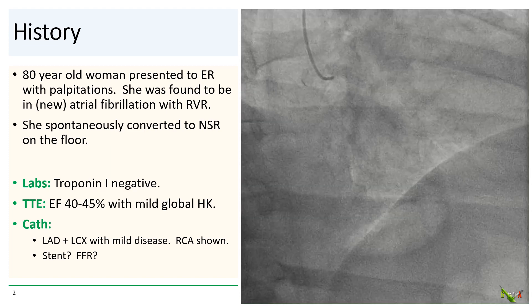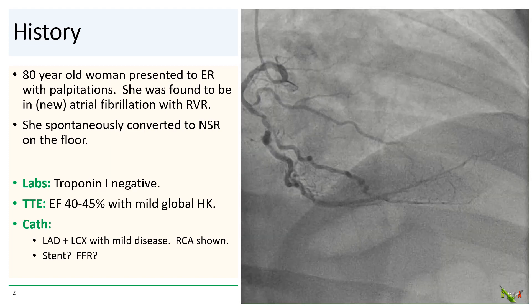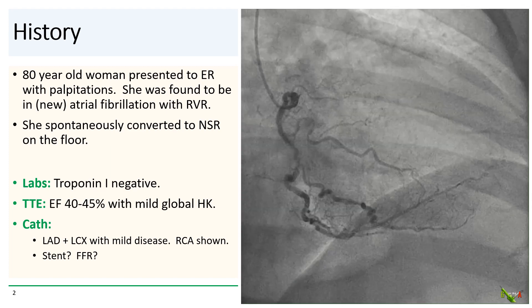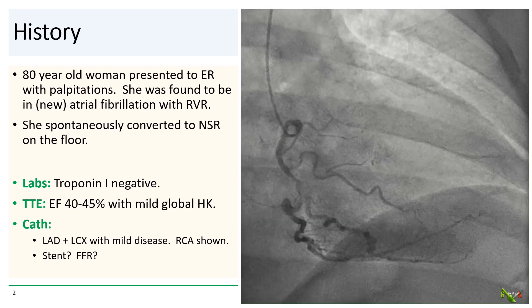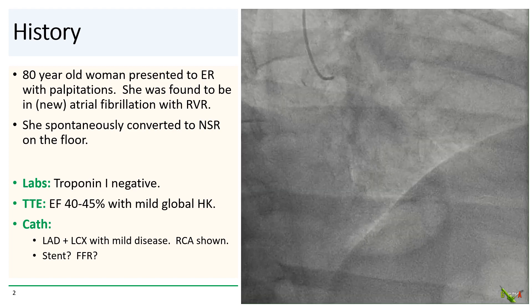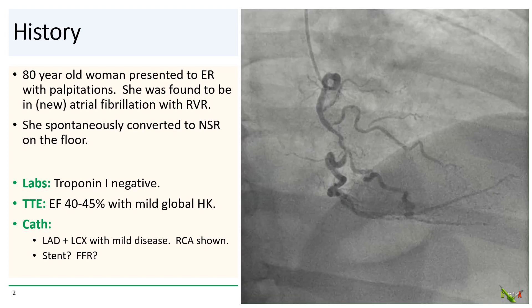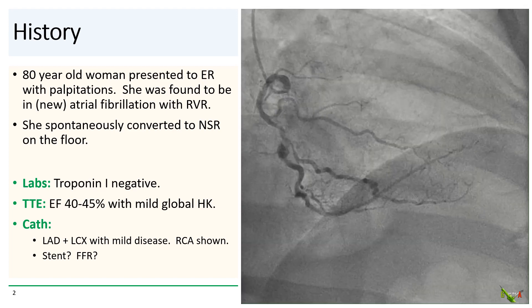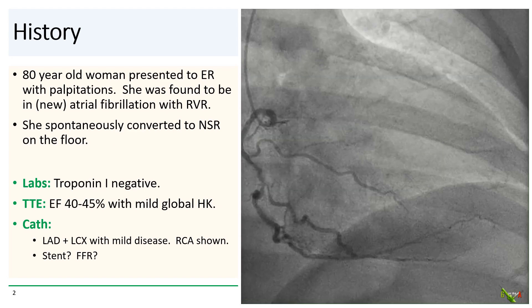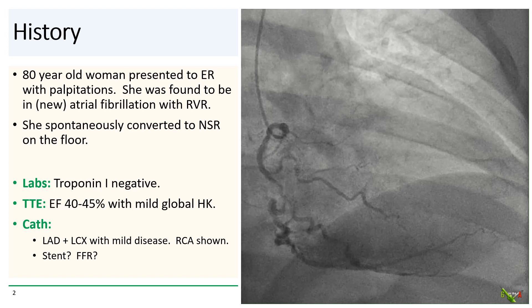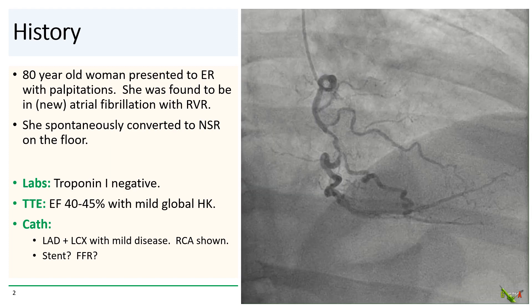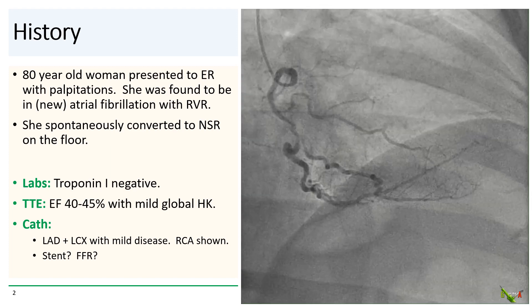She was referred to cath, which showed that the LAD and circumflex have mild disease. We see the RCA here, which is quite tortuous with a segment of disease in its midsection.